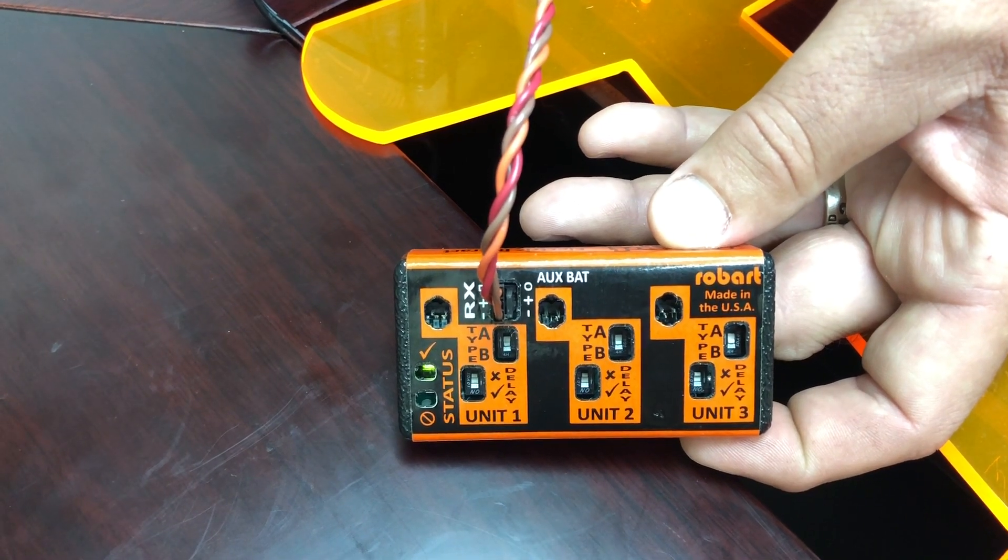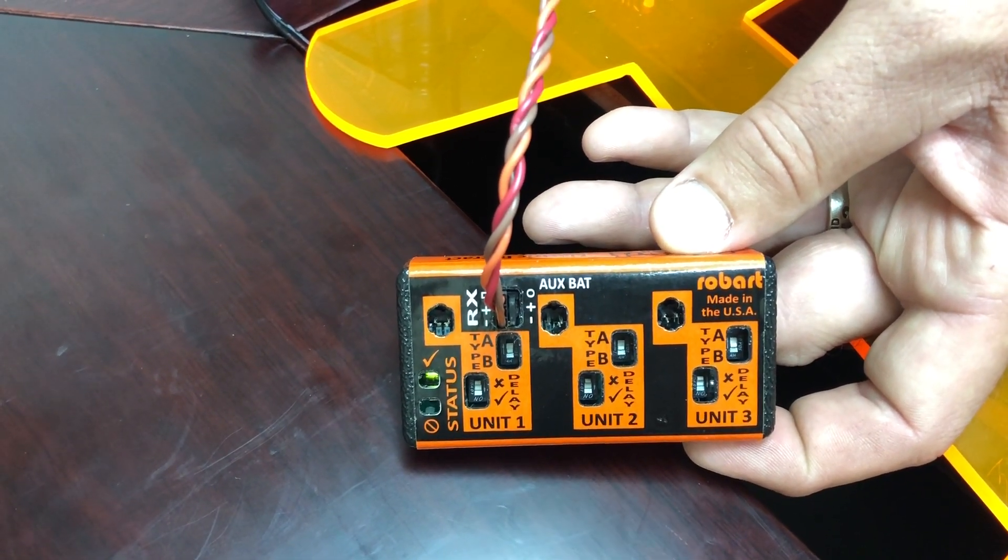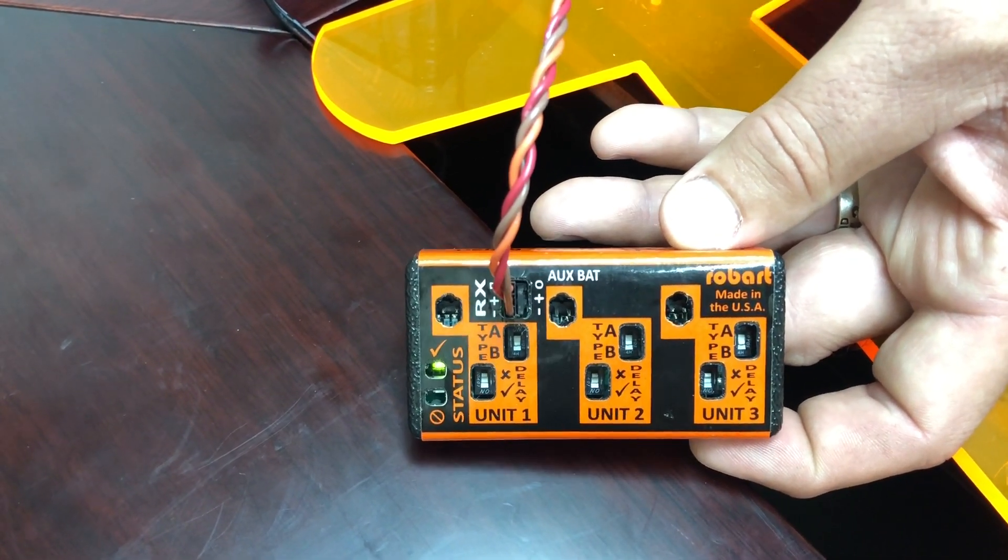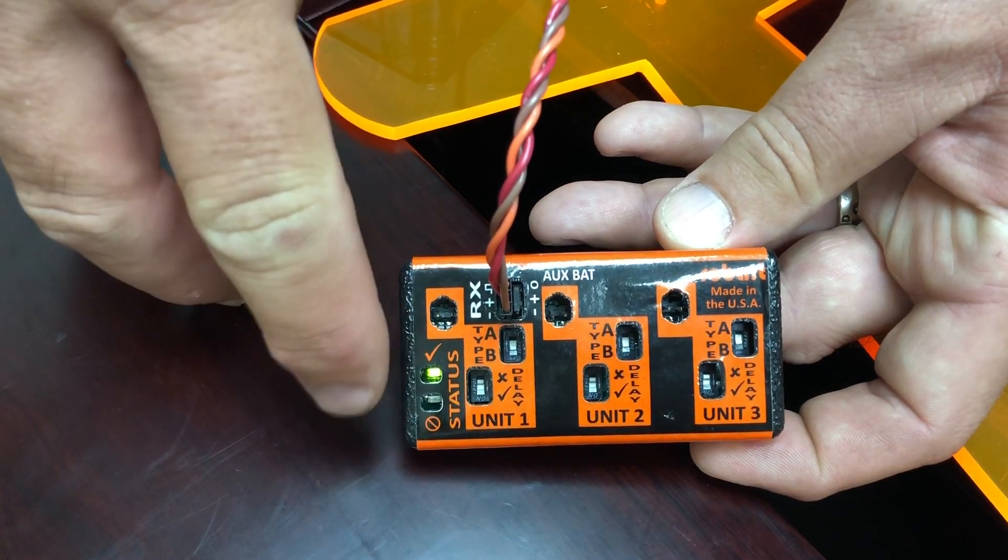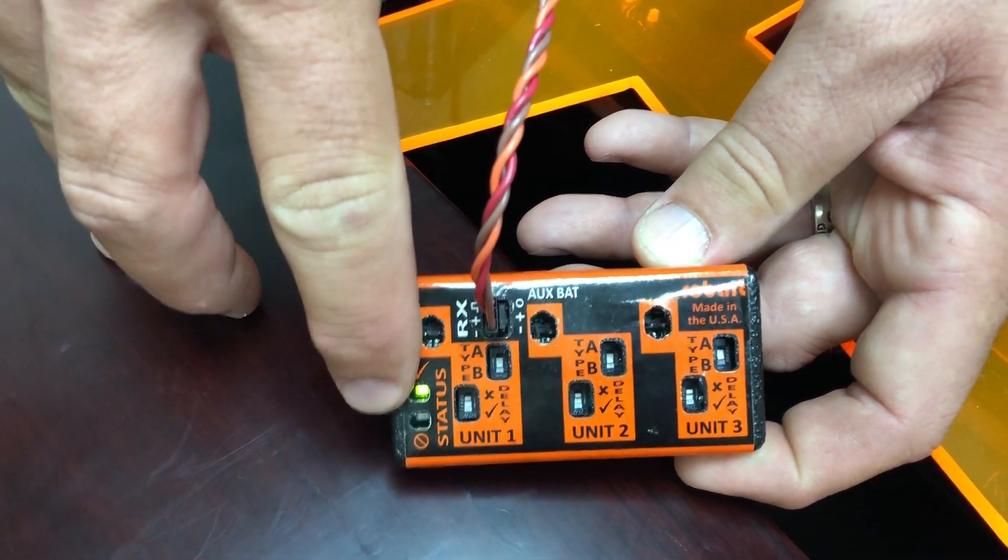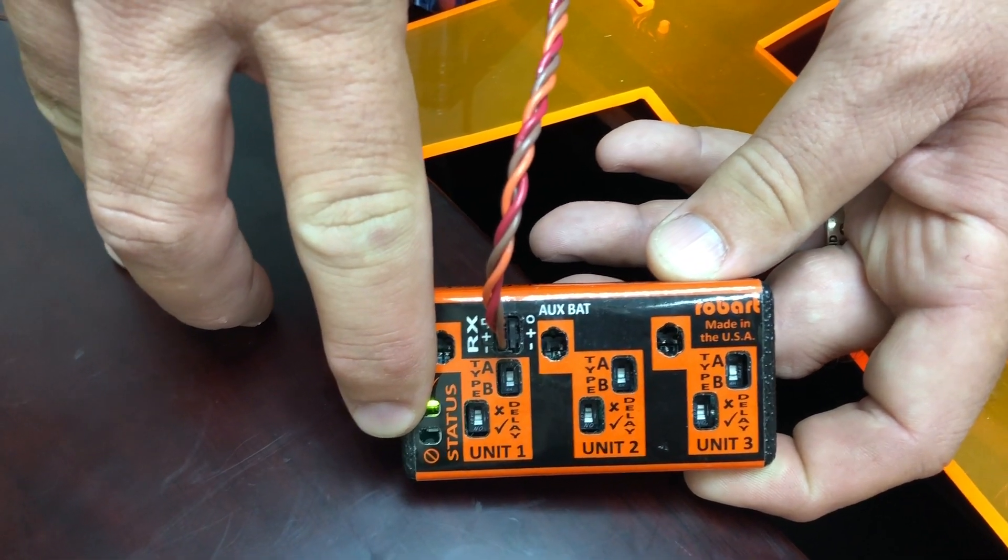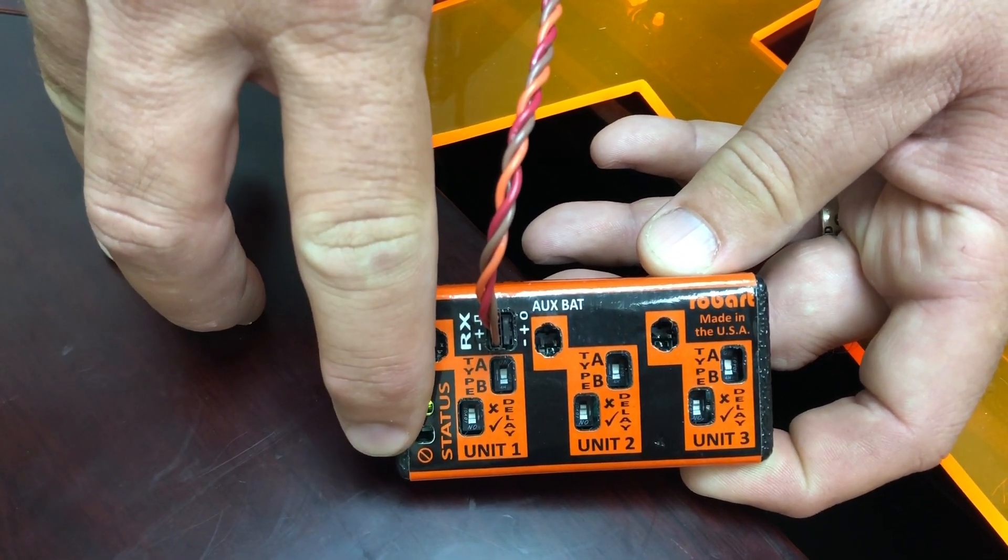The other one is if you have your batteries at too high of a voltage or too low of a voltage, you're going to get a red light. So if you have under 4.8 volts or over 9 volts, you will get a red light.